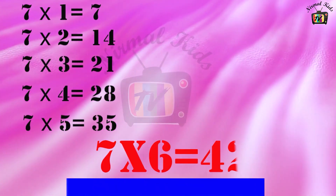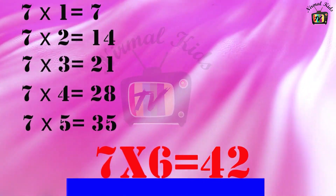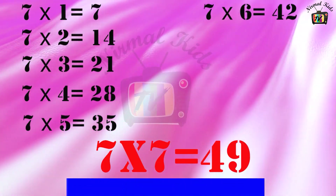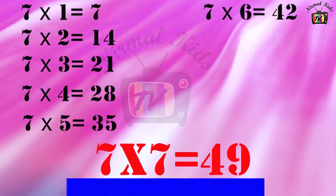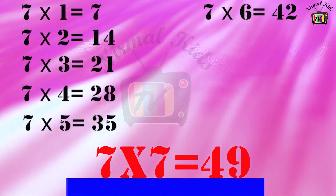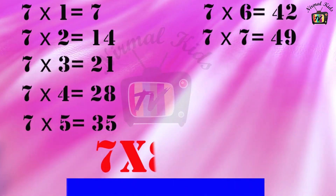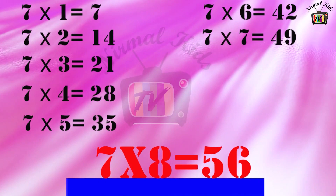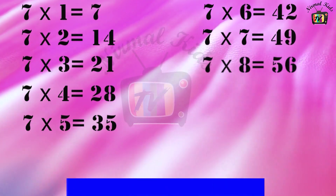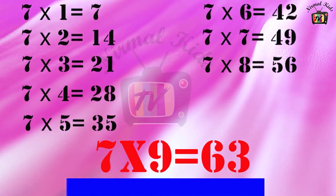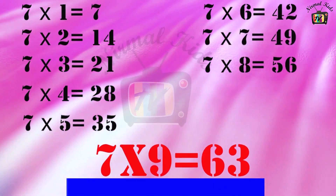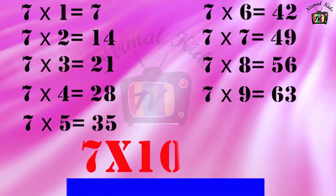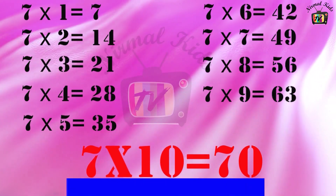7 6's are 42. 7 7's are 49. 7 8's are 56. 7 9's are 63. 7 10's are 70.